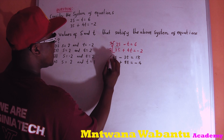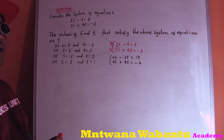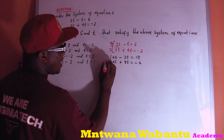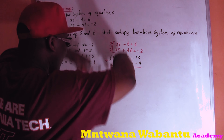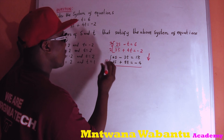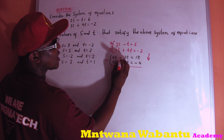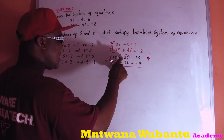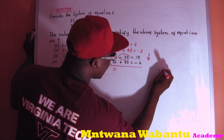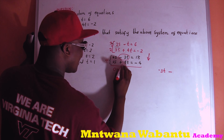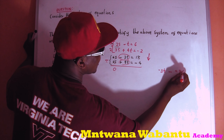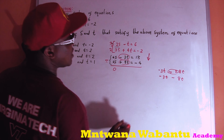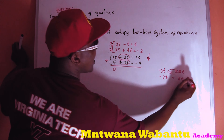Now the game is set up to eliminate. I subtract the second equation from the first. 6s minus 6s gives zero. For the t terms: negative 3t minus positive 8t — since the signs are different, we get negative 3t minus 8t, which equals negative 11t.